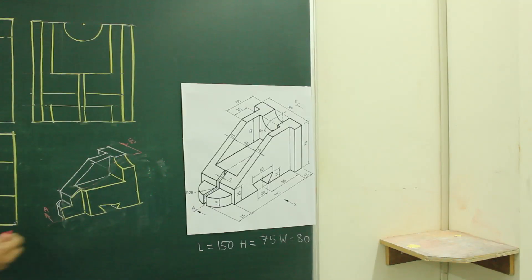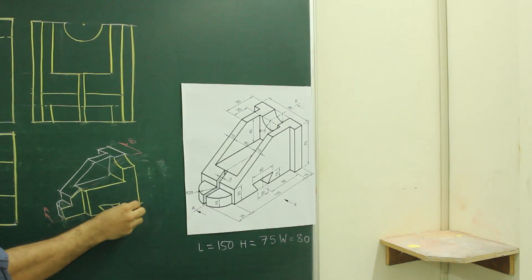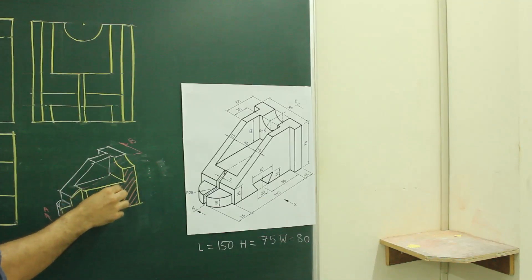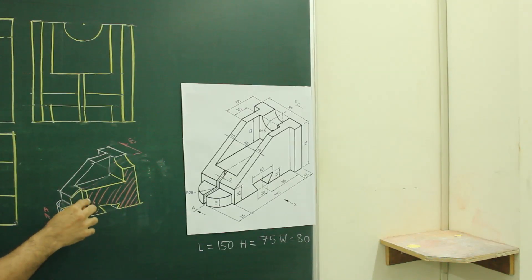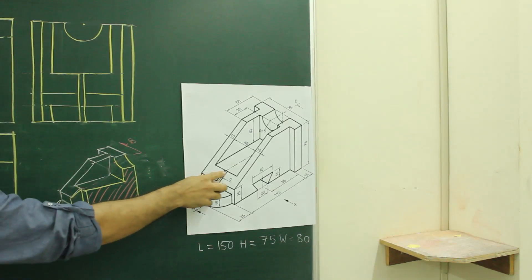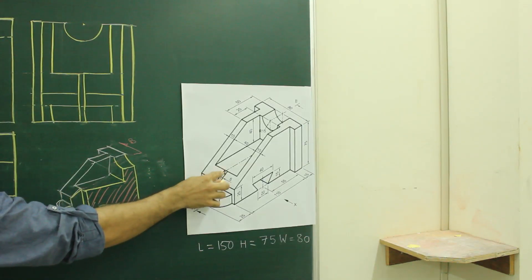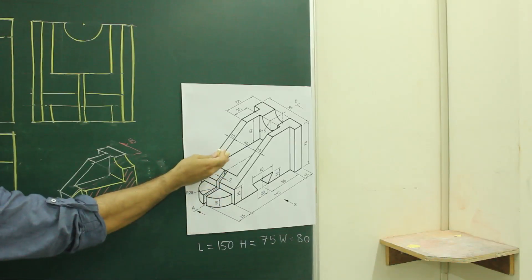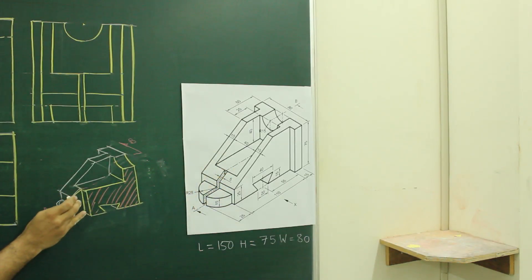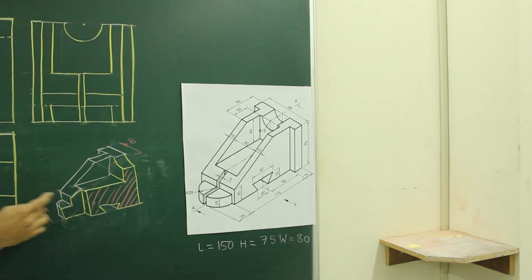So it will appear like this and this much portion we did hatch. We won't be hatching this part because if you see the main diagram, it is not cut — there is a slot in between — so your cutting plane line is passing through and through, it is not cutting this portion, so over here we won't be doing hatching.